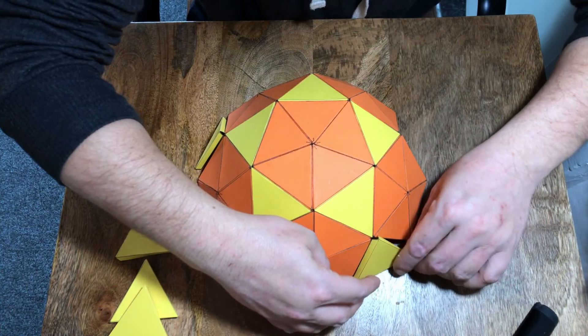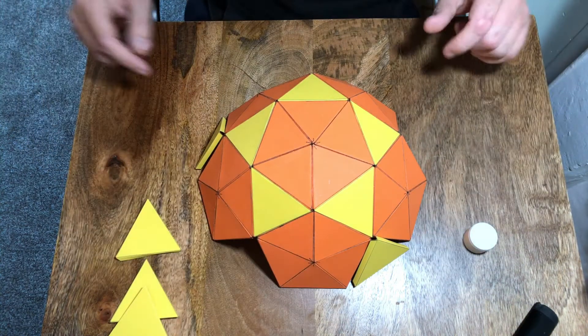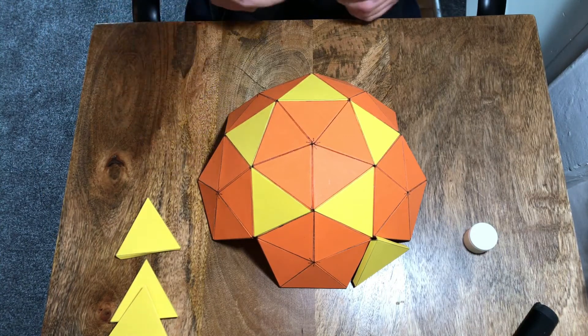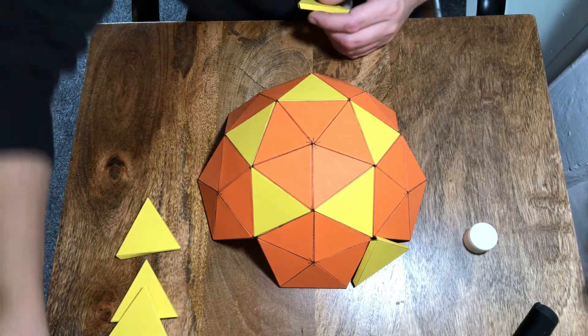So basically just anywhere there's a gap, there'll be five gaps and one of these yellow triangles will go in there. And I'll just cut back once I've done that.